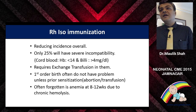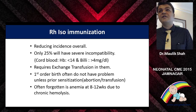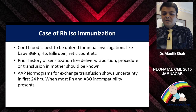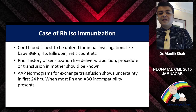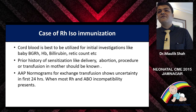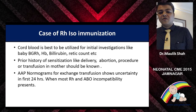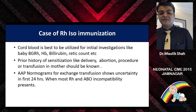Often forgotten is the anemia which occurs as an after-effect of RH isoimmunization — we forget to screen these babies at 8 to 12 weeks. Whenever there is a case of RH isoimmunization, cord blood should be best utilized. Many times our obstetric colleagues forget in the hurry of delivery, and the valuable blood that can be drawn from the cord is lost, requiring a prick to get all investigations done.